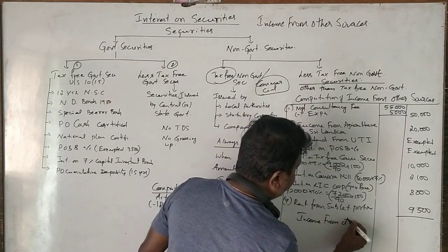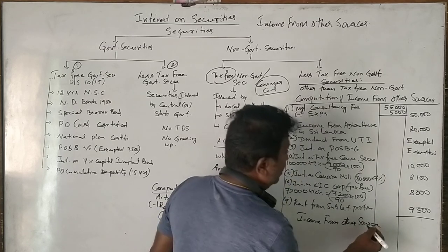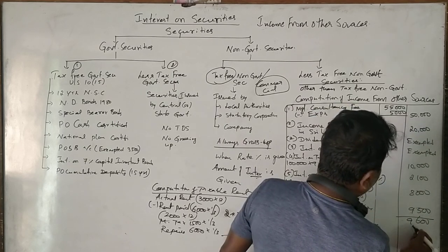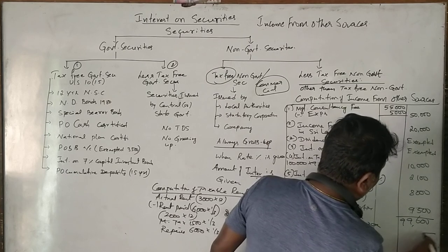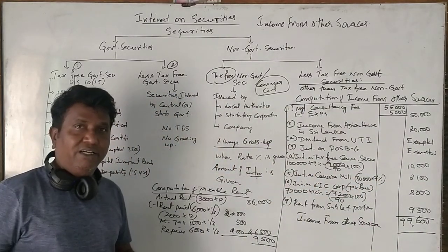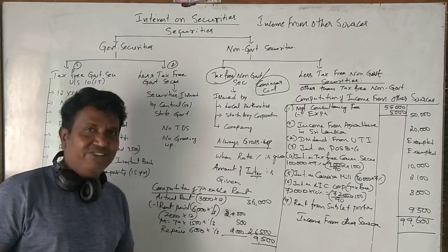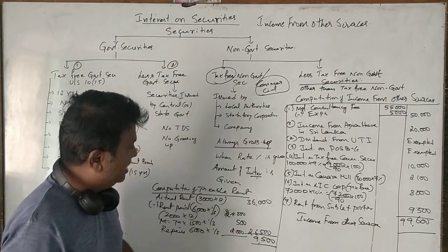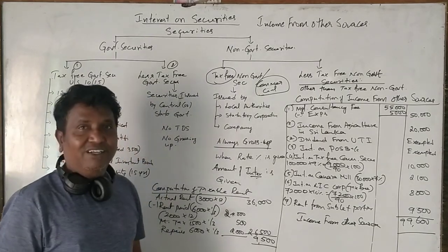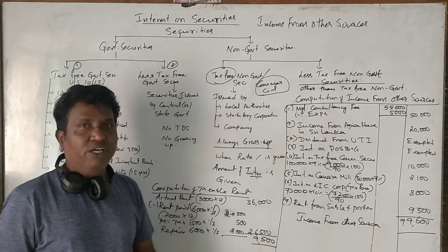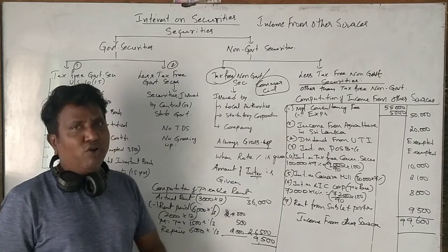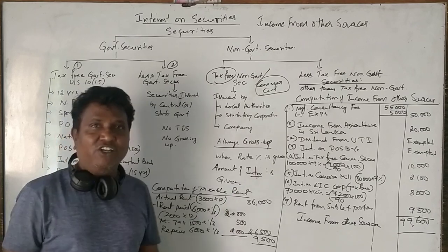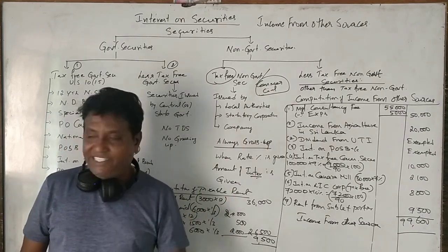Adding up all the items, the total income from other sources comes to 99,600 rupees. This question is from 2017 and is quite straightforward — you can solve it in five minutes. Please like, share, and forward to your friends, and don't forget to subscribe to the channel, Study Search. Thank you.